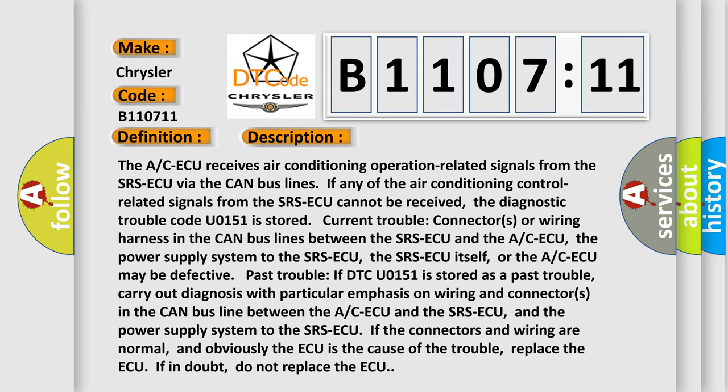The power supply system to the SRS ECU, the SRS ECU itself, or the A/C ECU may be defective. Past trouble: if DTC U0151 is stored as a past trouble, carry out diagnosis with particular emphasis on wiring and connectors in the CAN bus line between the A/C ECU and the SRS ECU, and the power supply system to the SRS ECU. If the connectors and wiring are normal, and obviously the ECU is the cause of the trouble, replace the ECU. If in doubt, do not replace the ECU.